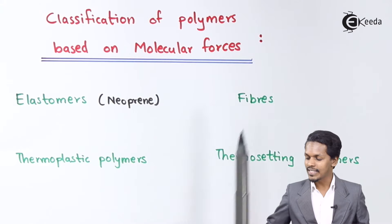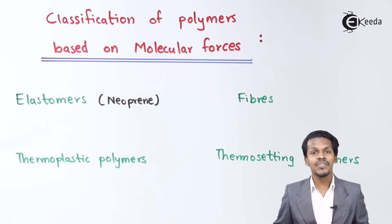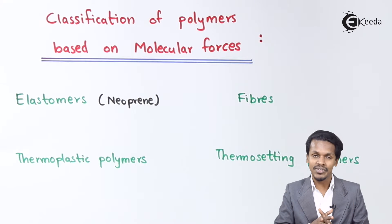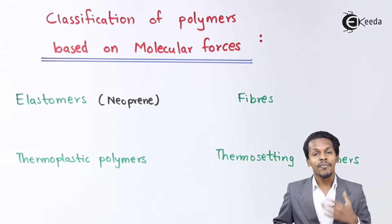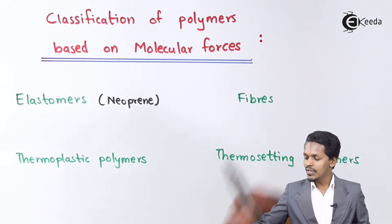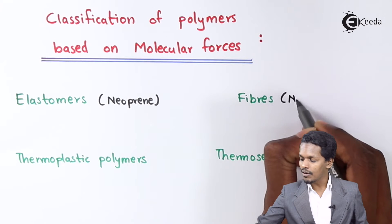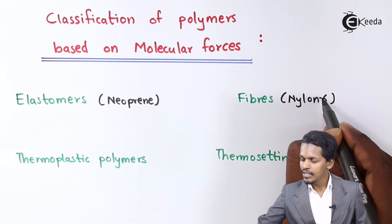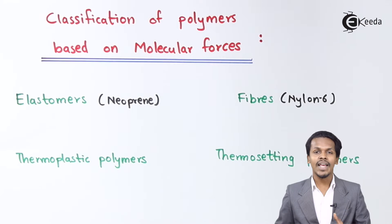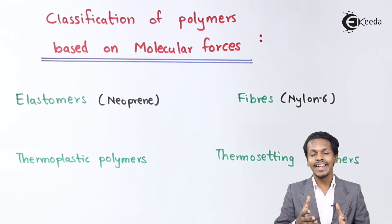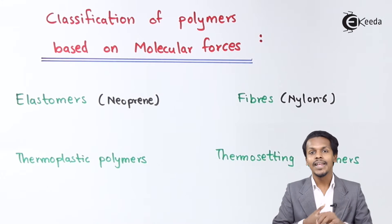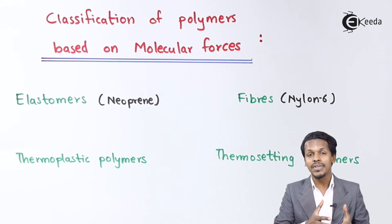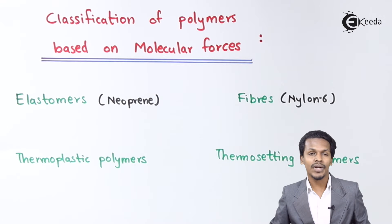There are also certain polymers which are fiber in nature, and that is the reason they are used in the textile industry. For example, nylon 6 or nylon 6-6. Nylon 6 is a polymer which has good tensile strength, and the solid polymers formed can be shaped into a fiber. That is why those are known as fibers.